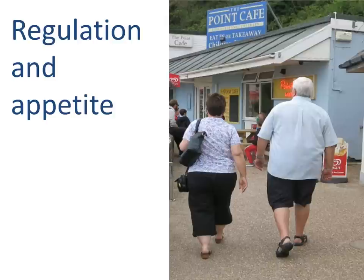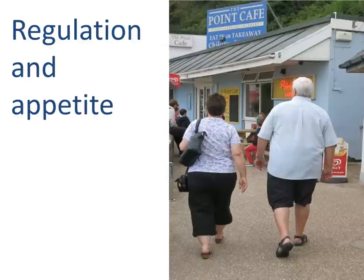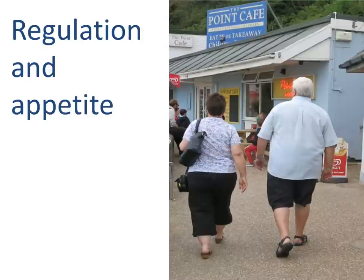If we eat more than our metabolic requirements, we gain weight; if we eat less, we lose weight. To homeostatically regulate body weight, we need to regulate appetite. The desire to eat is stimulated by a specialised group of neurons in the hypothalamus forming the appetite centre — it is the hypothalamus which generates the sensation of hunger and the desire to search for food. Eating also stimulates the release of dopamine from brain areas generating sensations of pleasure, which is why we enjoy eating particular foods.